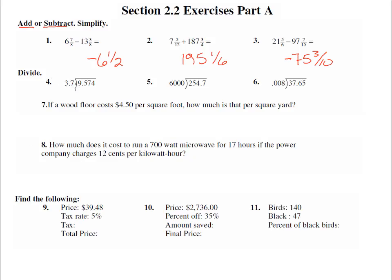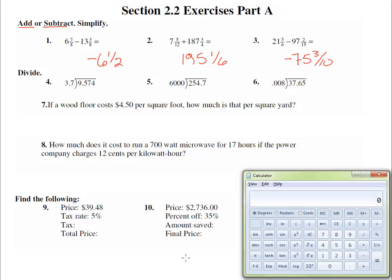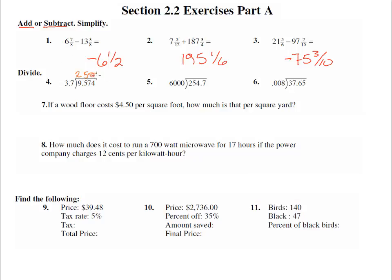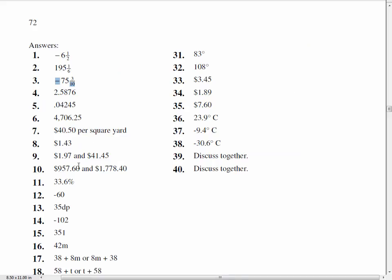Number four: divide 3.7 into 9.574. So 9.574 divided by 3.7. Again, we get to use a calculator. So let's take advantage of that opportunity. Here we have our calculator from the computer, and we'll punch that in: 9.574 divided by 3.7. Make sure you punch it in in the right order, and we get 2.587567—it goes on forever like that. So we could round it 2.588 if we would like to. Let's see what the answer has: 2.5876. That's okay. We rounded just one decimal place off of theirs, and that is perfectly okay.